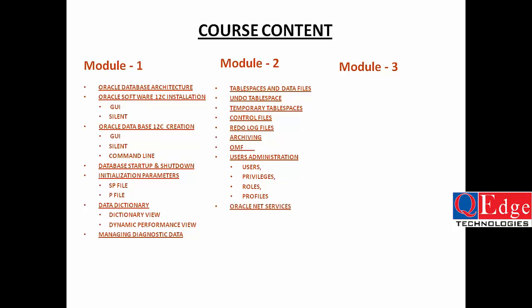Oracle Net Services provides connectivity between the client and the database server. The listener — configured via the listener.ora file — can be static or dynamic, and must be created at the server side to establish connections. TNS name is optional at the client side. There are three different connection methods: easy connection, local naming, and directory connection method.